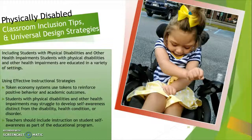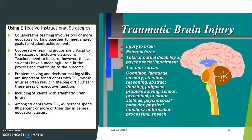Physical disabilities classroom inclusions: tips and universal design strategies. A couple of token economy systems: use tokens as reinforcement for positive behavior. Use effective instructional strategies. One is to include students with traumatic brain injury in the classroom — just have them there with you. Traumatic brain injury is when some sort of external force has damaged the brain and caused a disability on a cognitive level. It may affect memory, attention, reasoning, abstract thinking, judgment, problem solving, sensory function, and others.